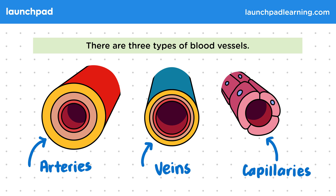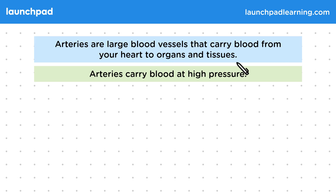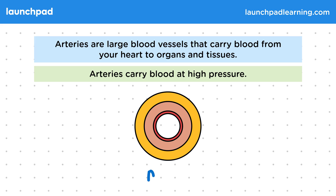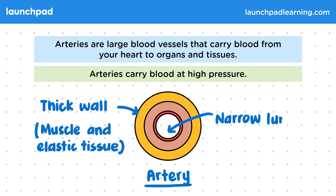Let's start by having a look at the role of arteries. Arteries are large blood vessels that carry blood from your heart to organs and tissues. Arteries carry blood at high pressure. This diagram shows a cross section of an artery. This vessel has a very thick wall which is made up of muscle and elastic tissue. This allows it to carry blood at high pressure without being damaged. The hole in the middle of this cross section is the lumen, and in arteries this is narrow to maintain high pressure.